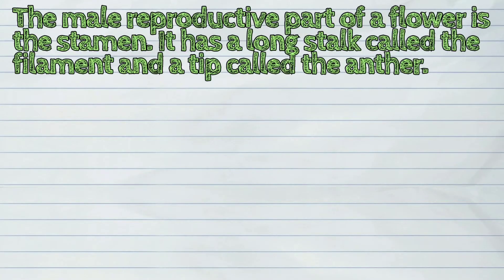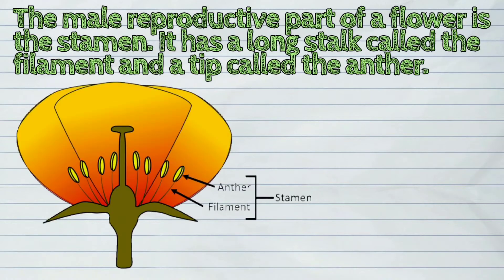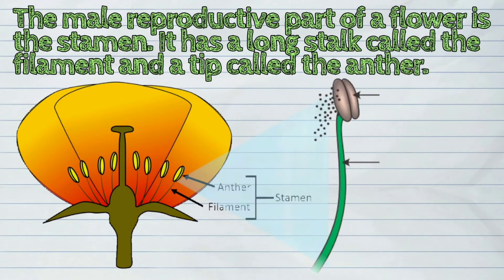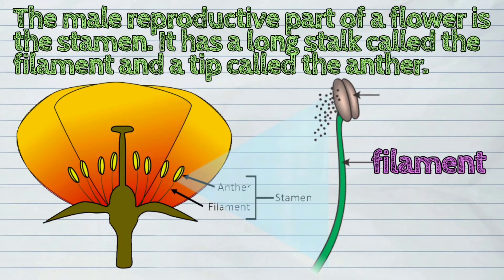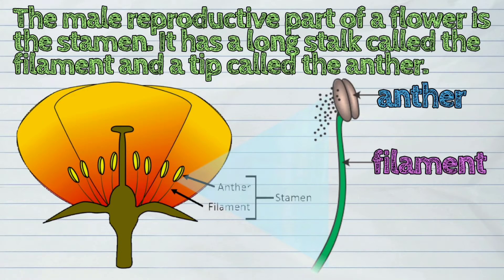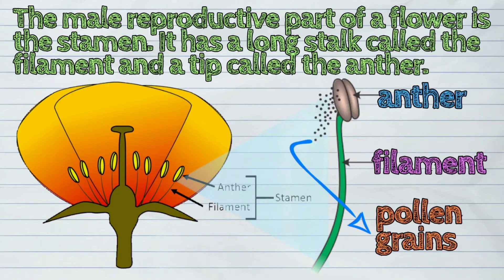The male reproductive part of a flower is the stamen. It has a long stalk called the filament and a tip called the anther. The pollen grains are found in the anther.